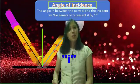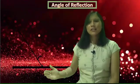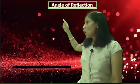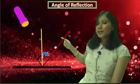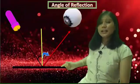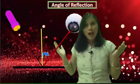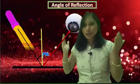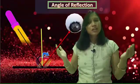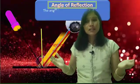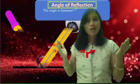The next point is angle of reflection. The angle between the normal line and the reflected ray is known as the angle of reflection. We generally represent it by small r.